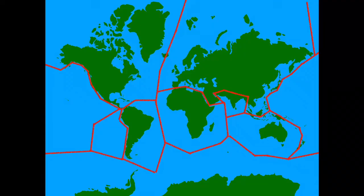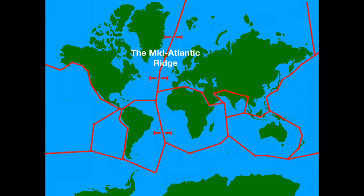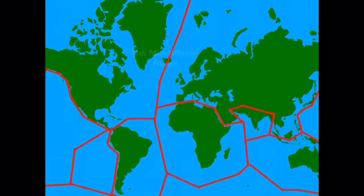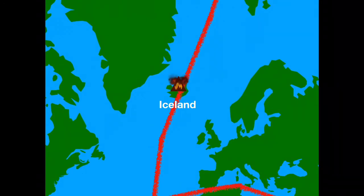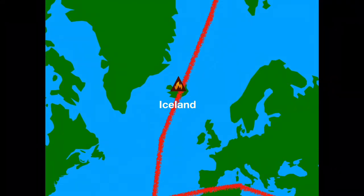An example of this is the Mid-Atlantic Ridge, which runs along the seafloor of the Atlantic Ocean. This is an underwater chain of volcanic mountains running for over 10,000 kilometers. Iceland is an example of where the Mid-Atlantic Ridge rises above sea level, forming a volcanic island made of igneous rock with over 30 active volcanoes.